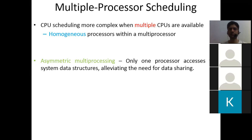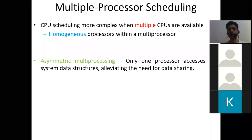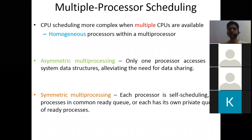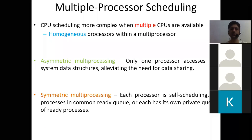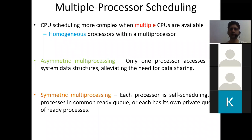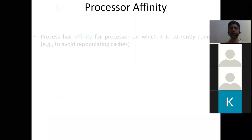The two types are asymmetric and symmetric multiprocessing. In asymmetric multiprocessing, only one processor accesses the system data structure, eliminating the need for data sharing — only one processor can access shared data at one time, so others must wait. In symmetric multiprocessing, each processor is self-scheduling with separate ready queues, or they can share a common ready queue.